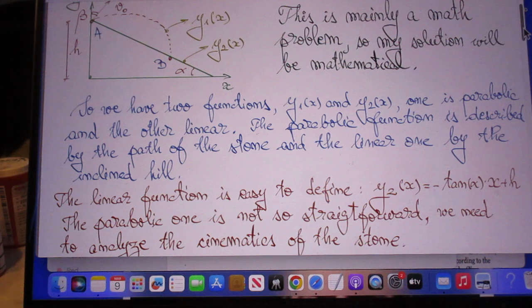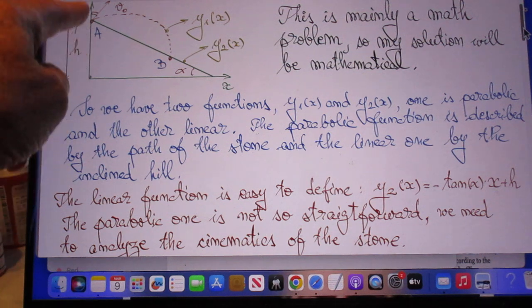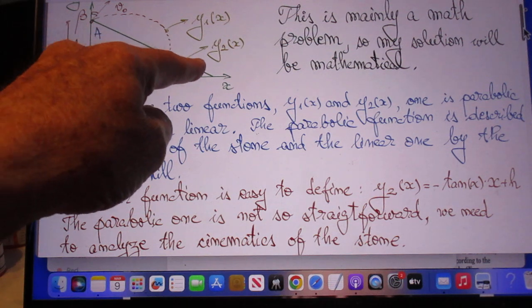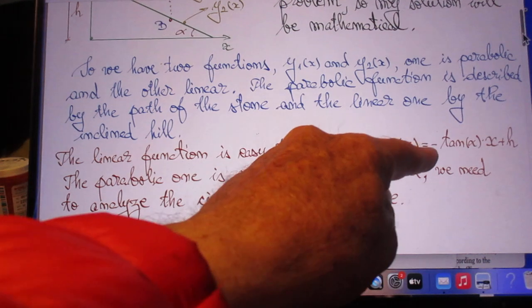Take x equals zero, then y_2 is h. And y_2 declines and declines with increasing x, that's why you have the minus tangent here.